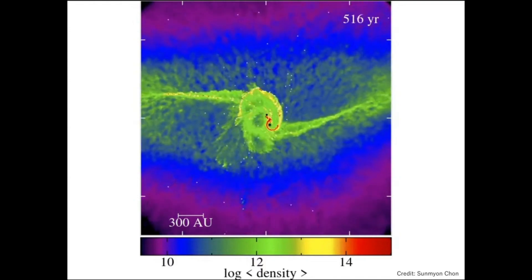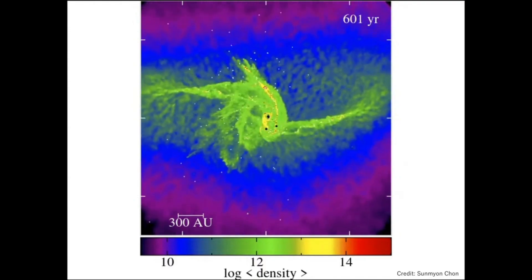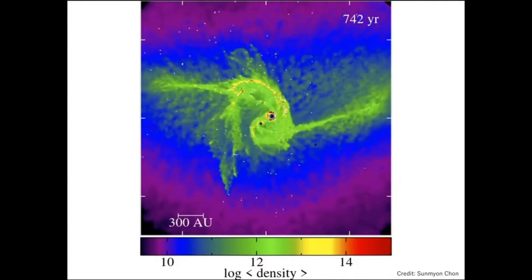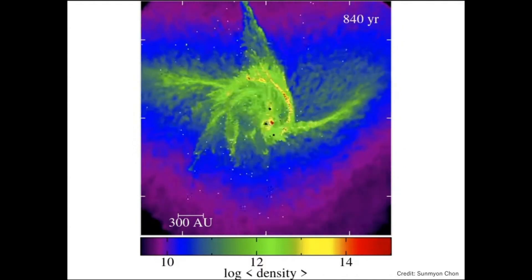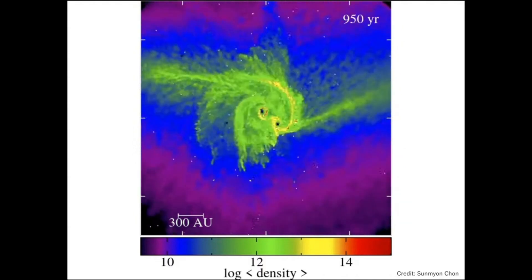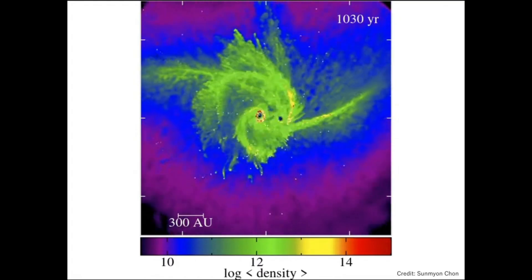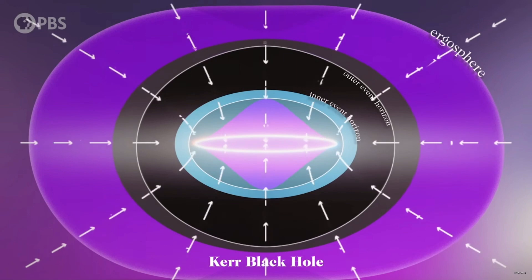This unique variety of black hole has both spin and charge. A Reisner-Nordstrom black hole accumulates its charge by consuming a disproportionate amount of either positive or negative charges. The presence of electric charge affects the geometry of the spacetime around the black hole, leading to the formation of an inner event horizon under certain conditions.